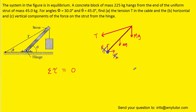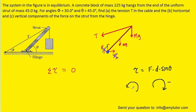We recall that torque equals force times distance times the sine of an angle. Furthermore, any torque that tends to rotate an object in a clockwise fashion is considered negative torque, and torque that goes in an anticlockwise direction is considered positive torque.